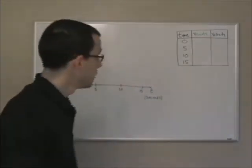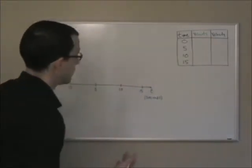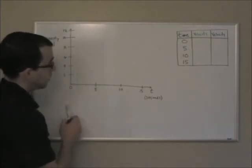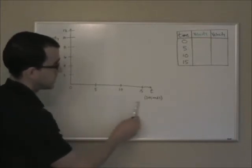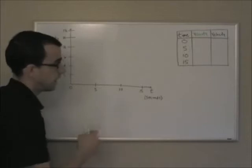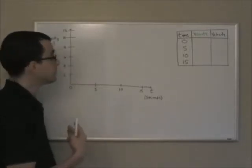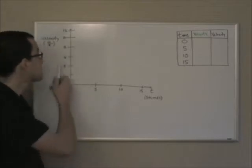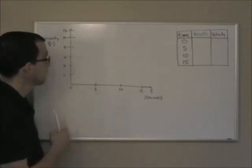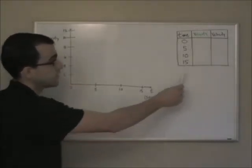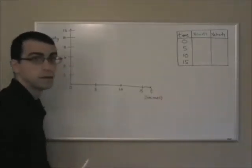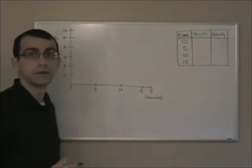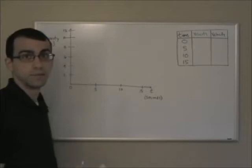On the graph on the board, the horizontal axis has time and the vertical axis has velocity. We also have the values in tabular form, and we're going to use that as we plot these graphs.